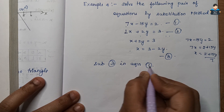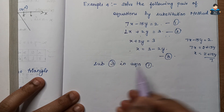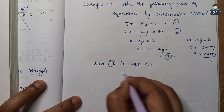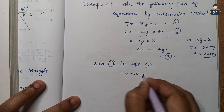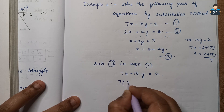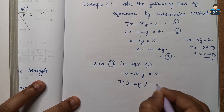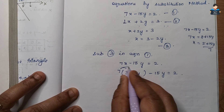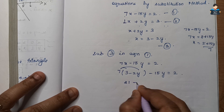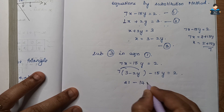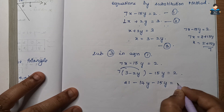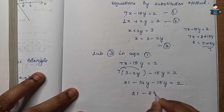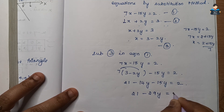Now we substitute equation 3 into equation 1. In place of x, we put 3 minus 2y. So: 7 into (3 minus 2y) minus 15y is equal to 2. Expanding: 21 minus 14y minus 15y is equal to 2. So 21 minus 29y equals 2.